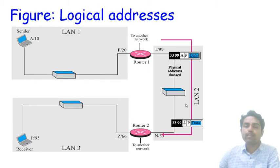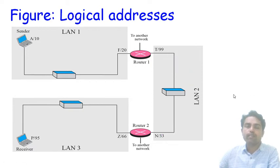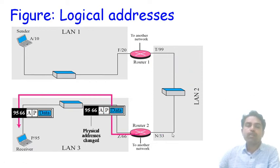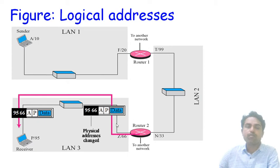The data reaches router R2. Again, only the physical addresses change at R2 while the remaining logical addresses of sender and receiver are preserved. The physical address 33 becomes 66, and the destination address of the receiver is 95. The logical addresses and data content remain the same. The complete data is finally delivered to the receiver. This is how logical addressing works while sending data from sender to receiver.